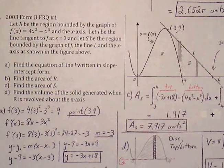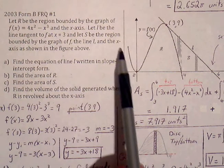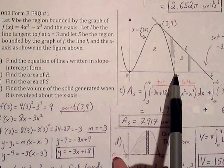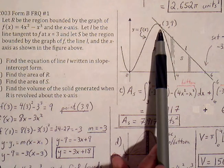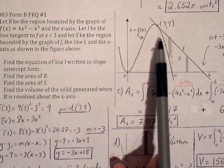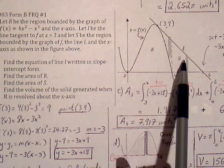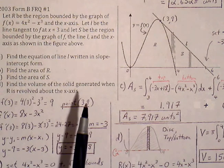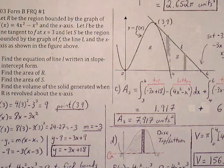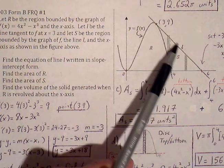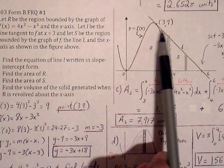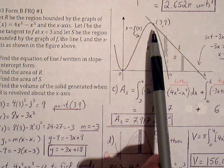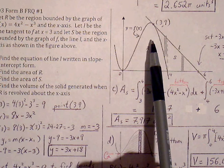Number 4. Let R be the region bounded by the graph of 4x squared minus x cubed and the x-axis. Let L be the line tangent to this graph f of x at x equals 3. Let S be the region bounded by the linear graph L and the x-axis shown in the figure. Part A: find the equation of the line L in slope-intercept form. We need to figure out the equation of this line, knowing that it is tangent to the curve at x equals 3.